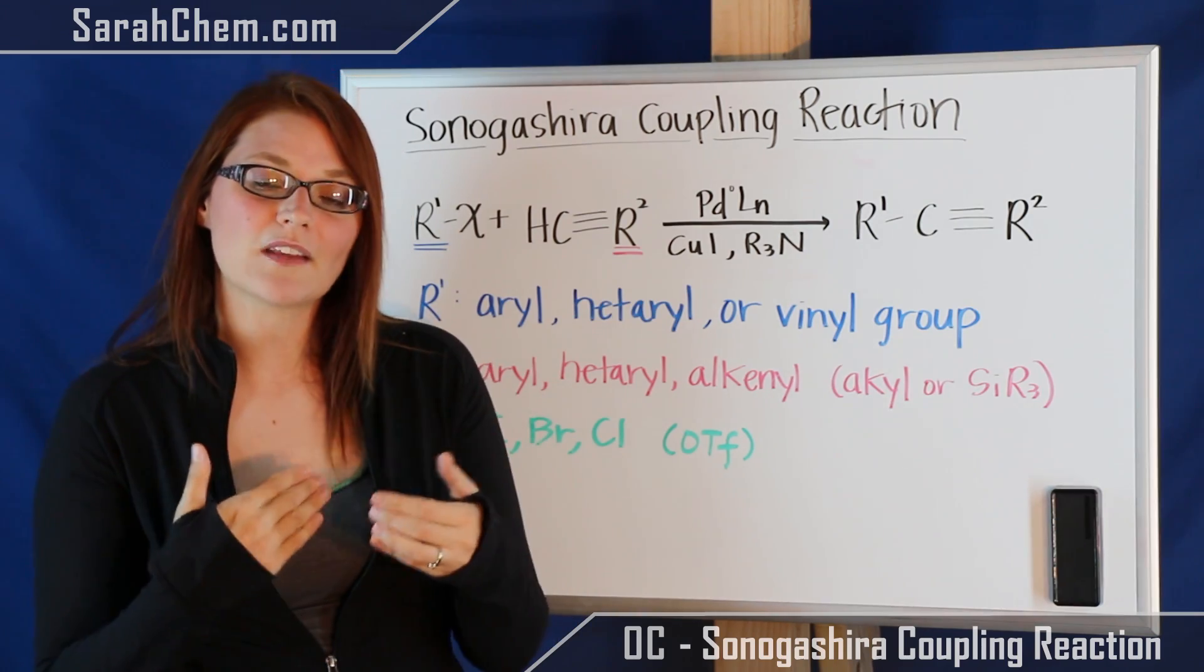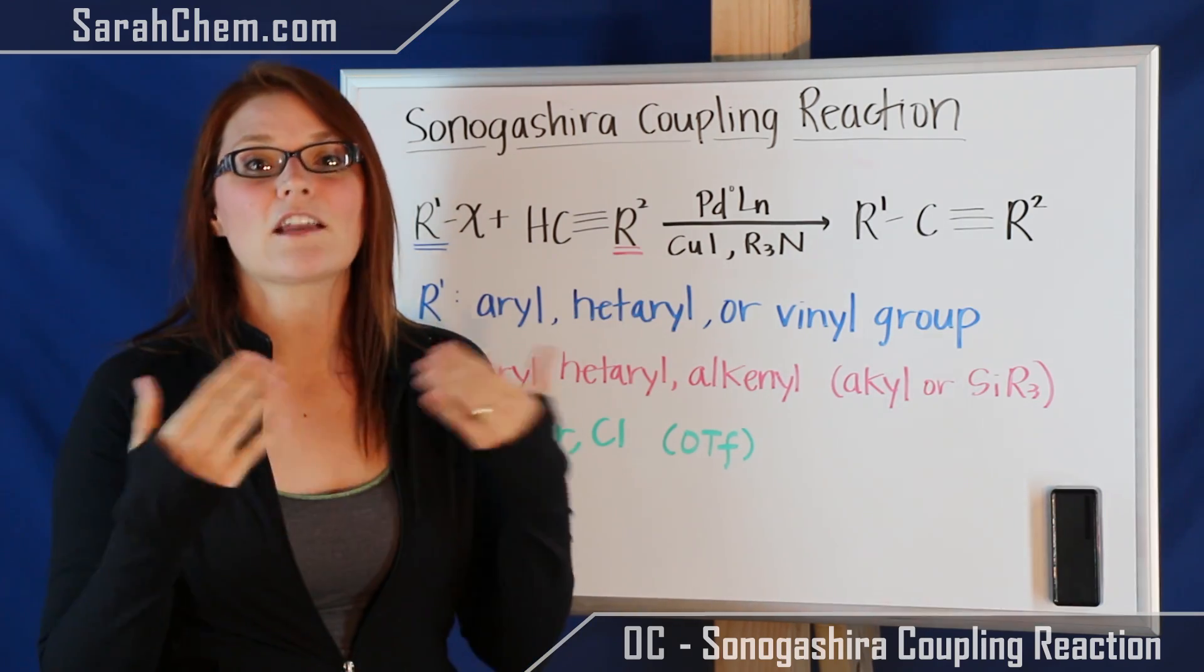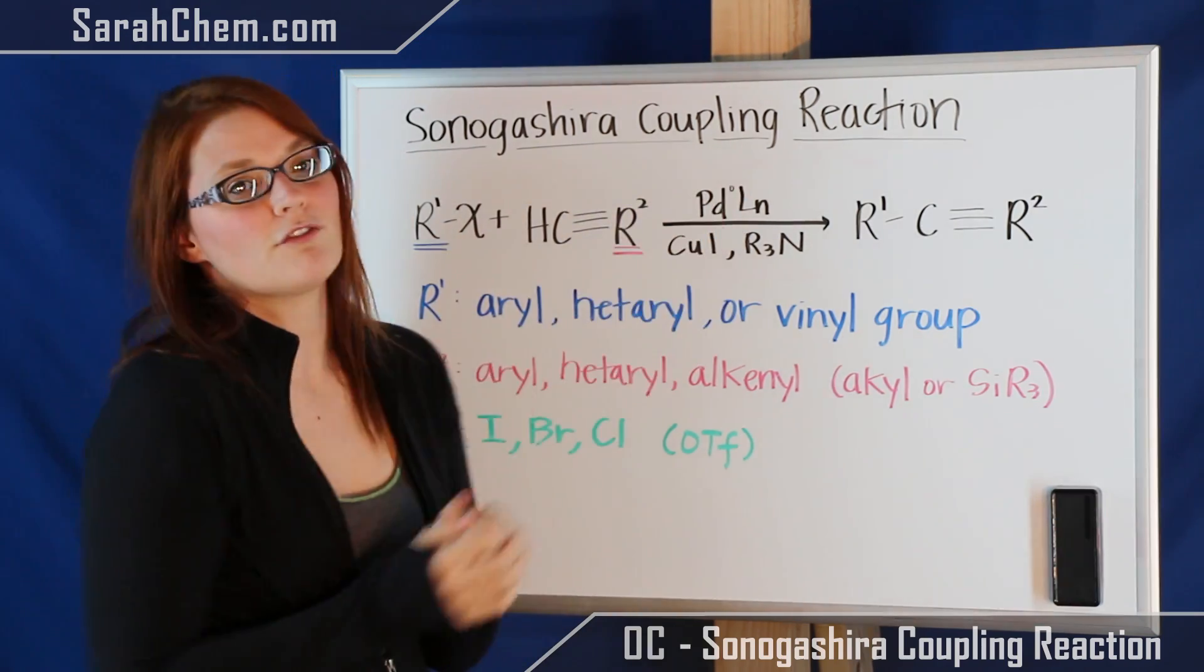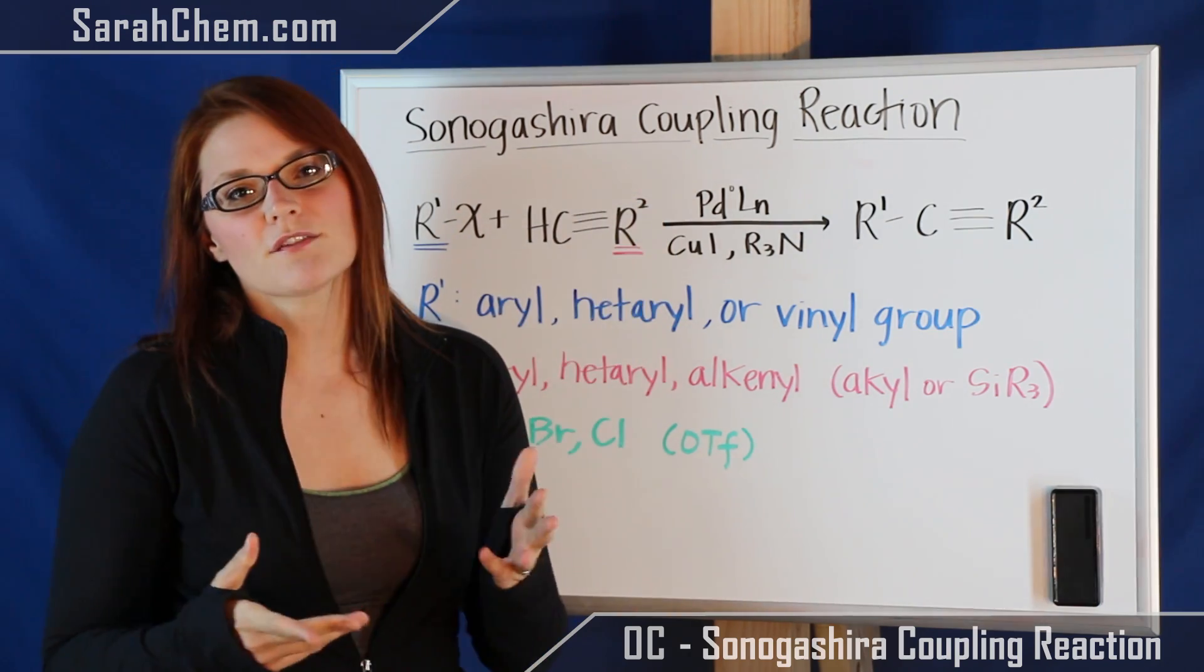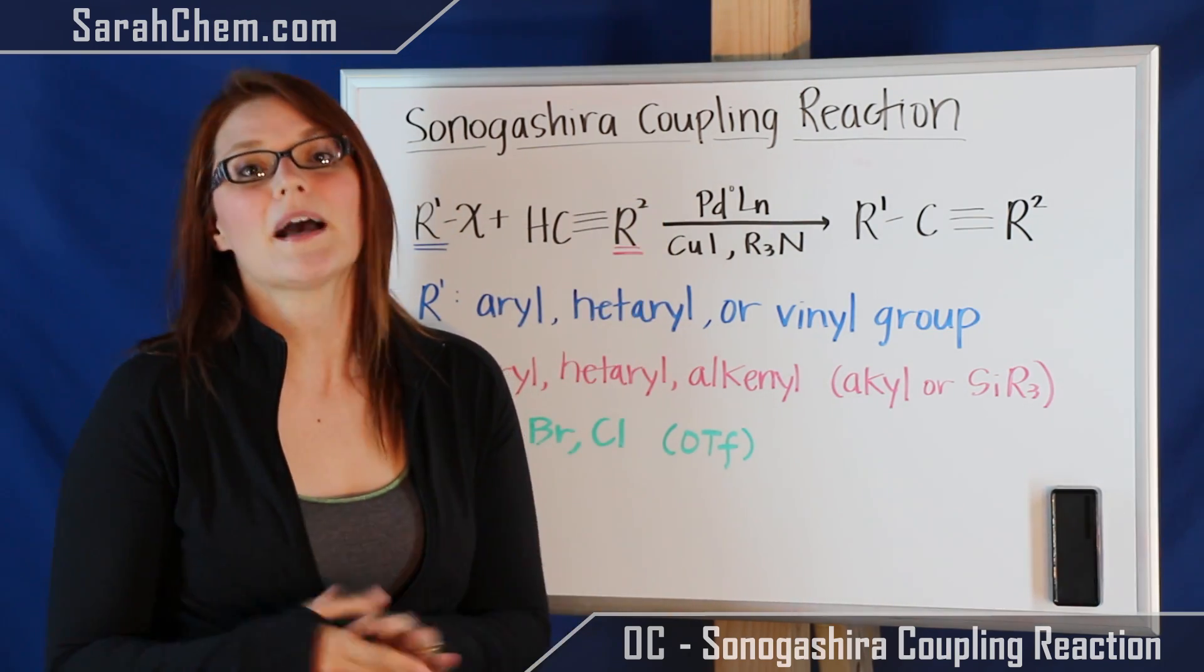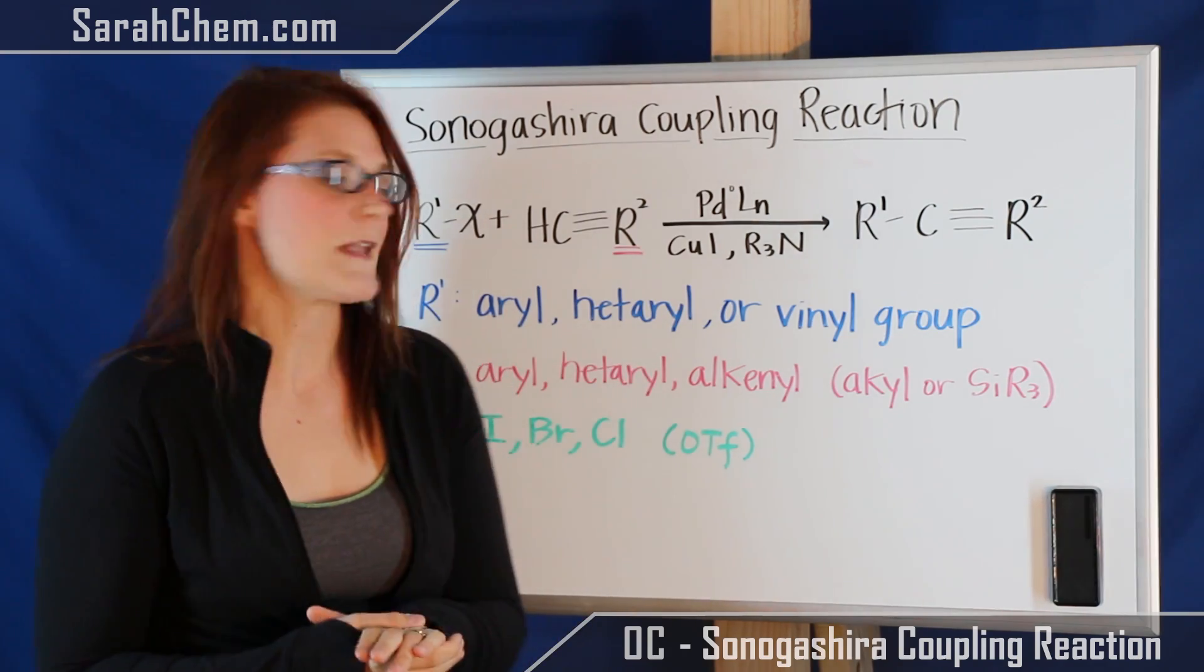Understand that the number of ligands attached to your palladium can vary. Most often we're looking for a 14 electron system over here and that L can be a phosphine group. It can be the solvent, some kind of amine. There's a lot of options for what that ligand will be.